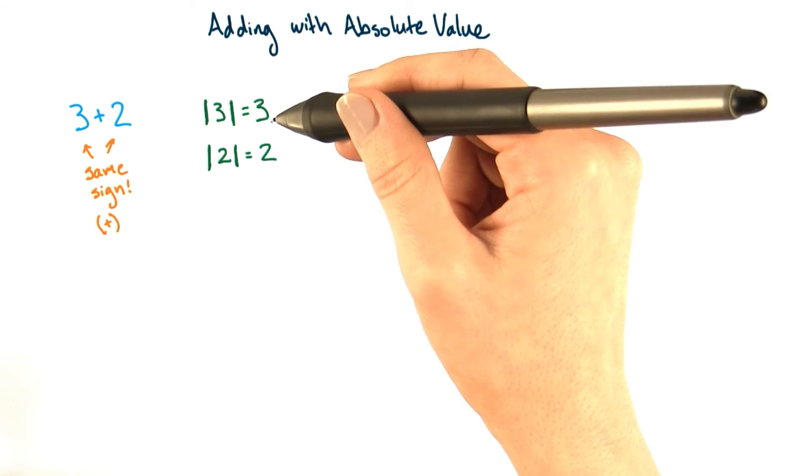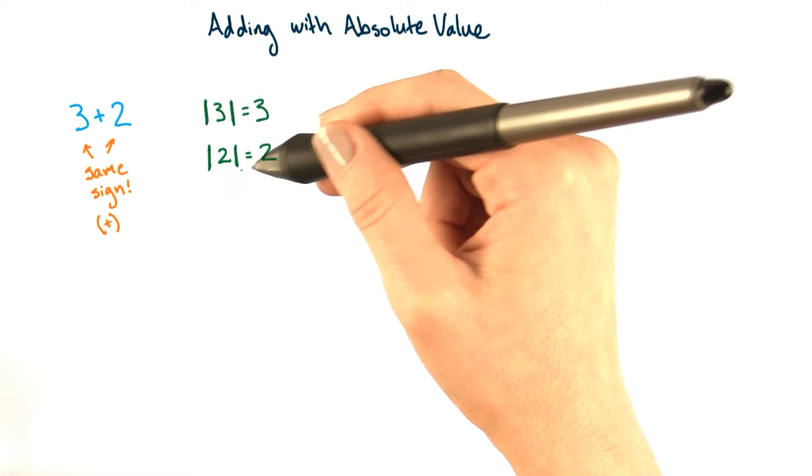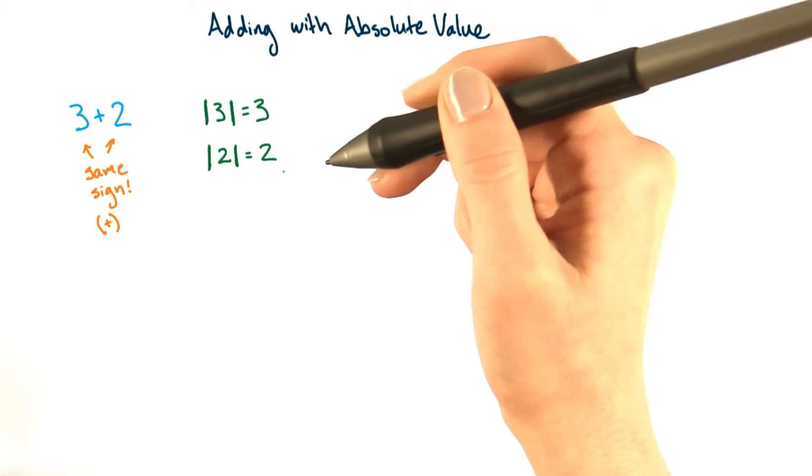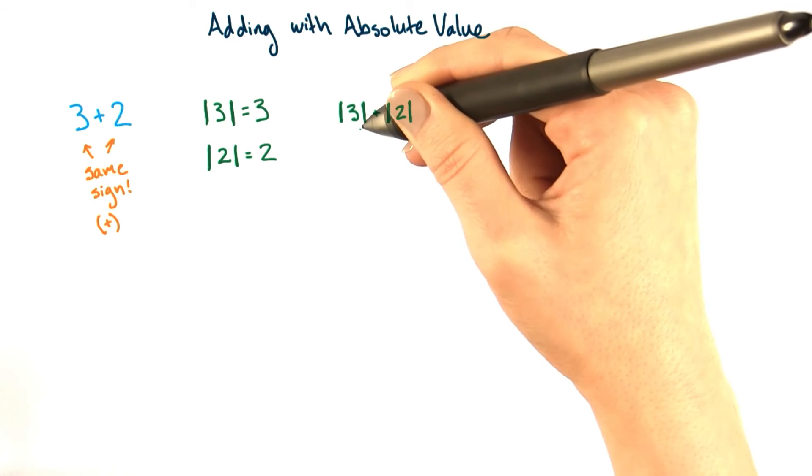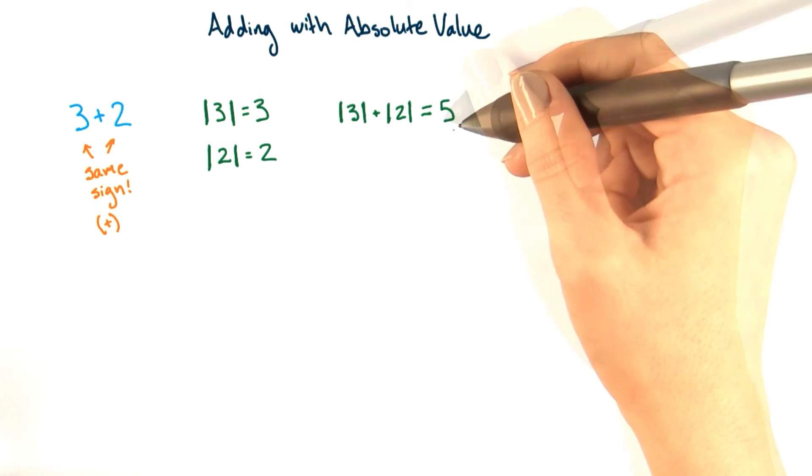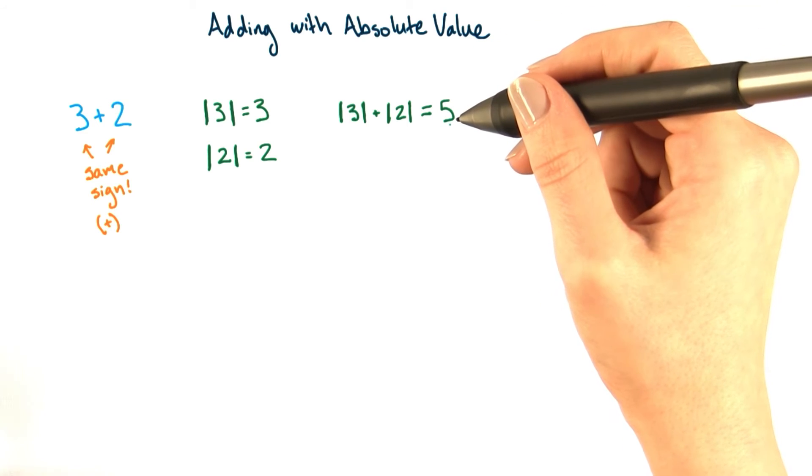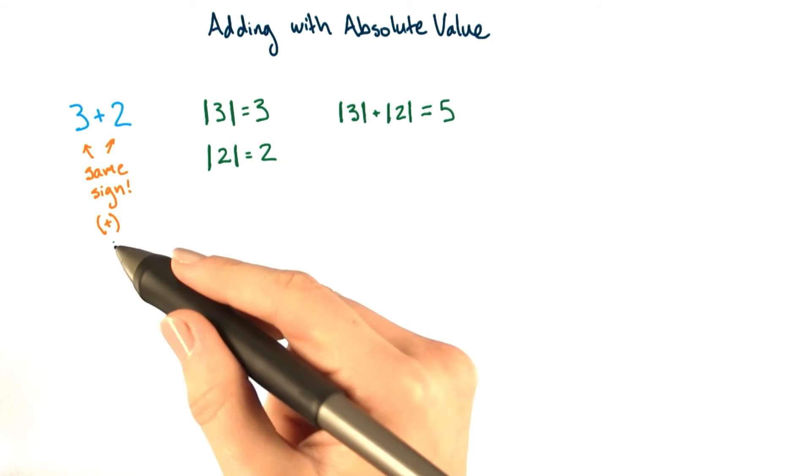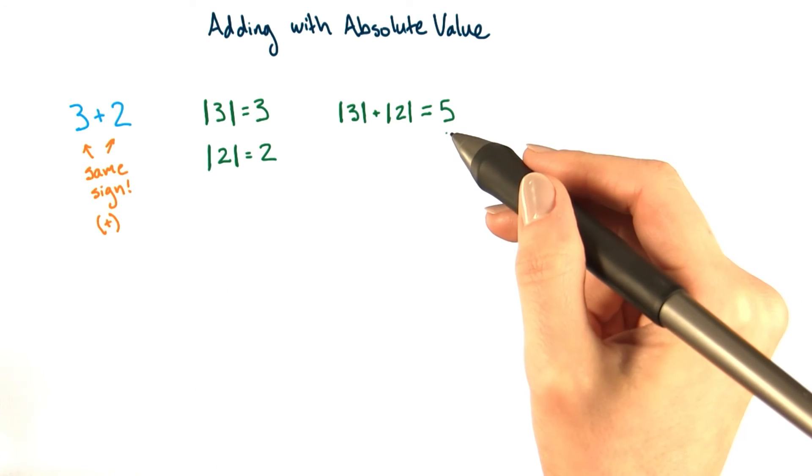The absolute value of 3 is 3 and the absolute value of 2 is 2. So we can add the absolute value of 3 plus the absolute value of 2 to get 5. And then use the original sign that 3 and 2 both shared, which is positive, and we get positive 5.